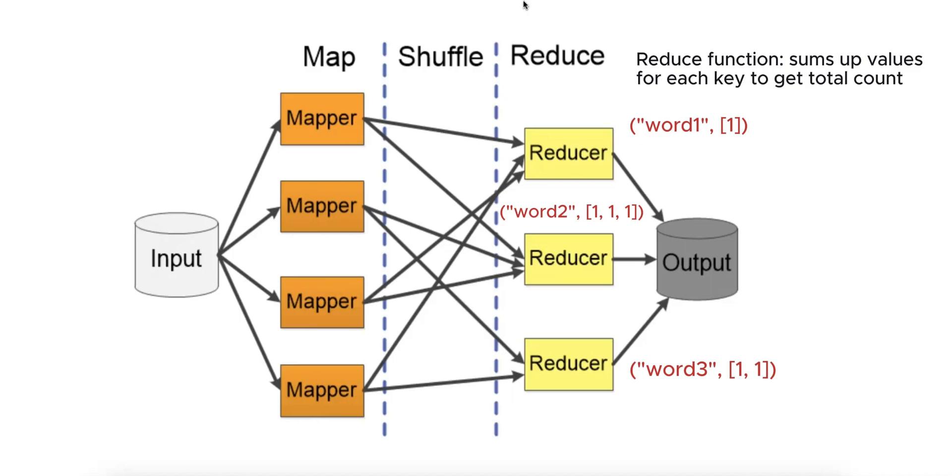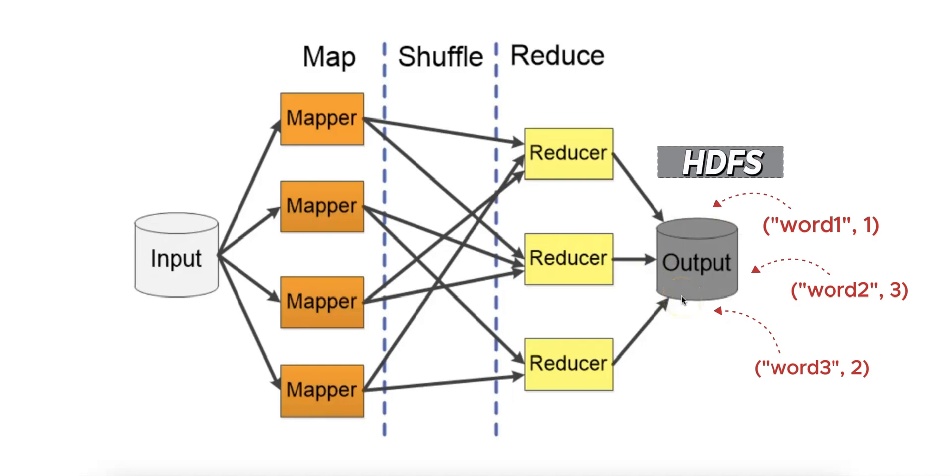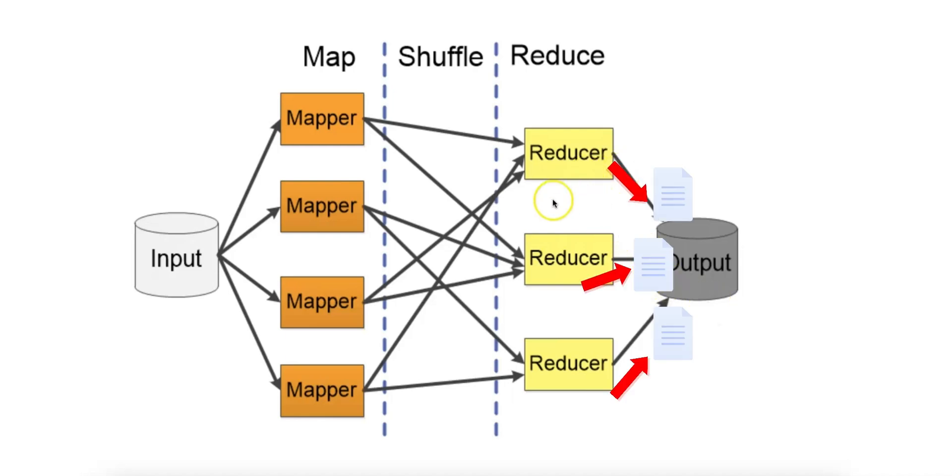For example, in the word count problem, the reducer might sum up all the ones associated with each word, producing an output of a word mapped to the total count. The final key-value pairs generated by the reducers are written to the output storage, for example, HDFS, and this is the final result of the MapReduce job. The output is typically stored in multiple files, one for each reducer.